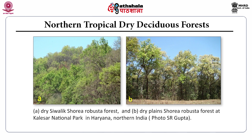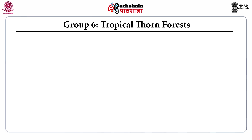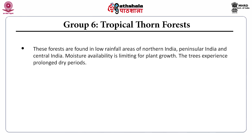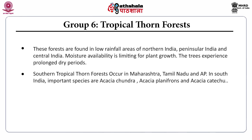Group 6, the tropical thorn forests, are found in low rainfall areas of northern India, peninsular India, and central India. Moisture availability is limiting for plant growth and trees experience prolonged dry periods. The southern tropical thorn forests occur in Maharashtra, Tamil Nadu, and Andhra Pradesh. Important species in South India are Acacia chundra, Acacia planifrons, and Acacia catechu.